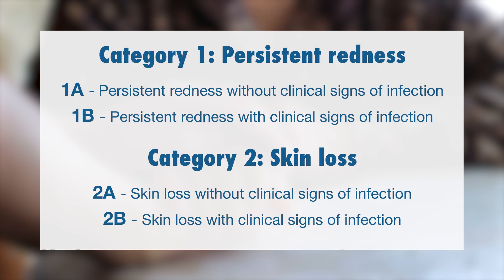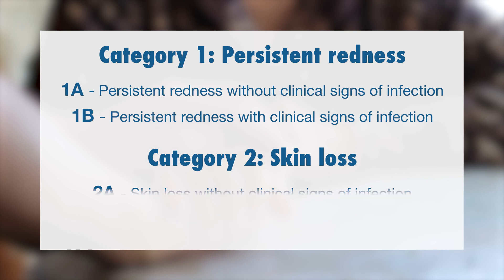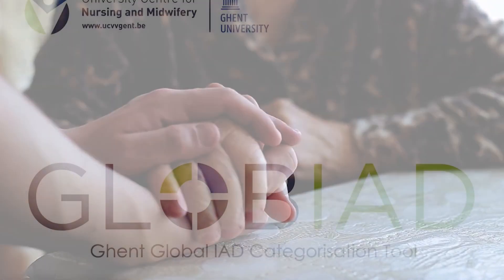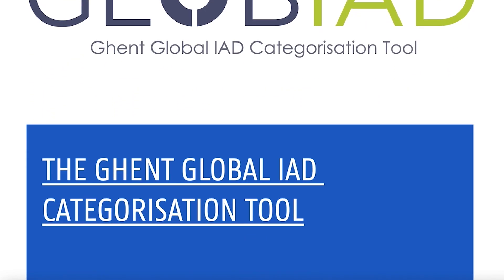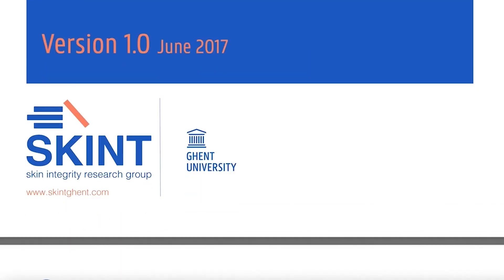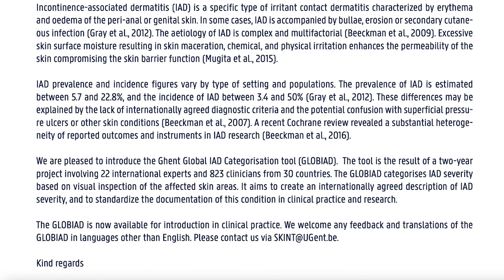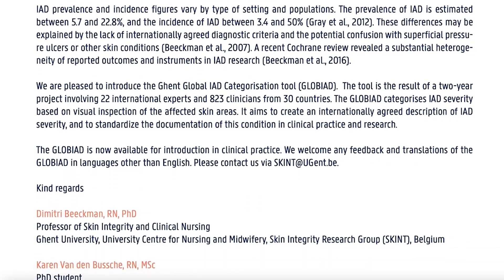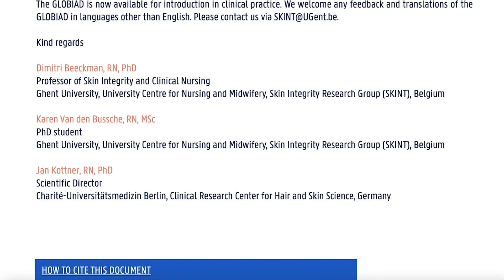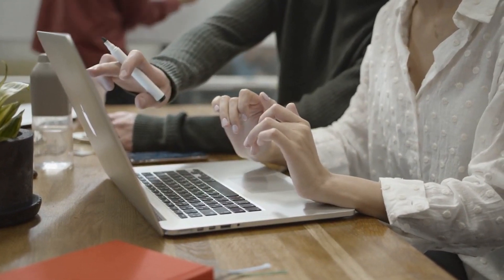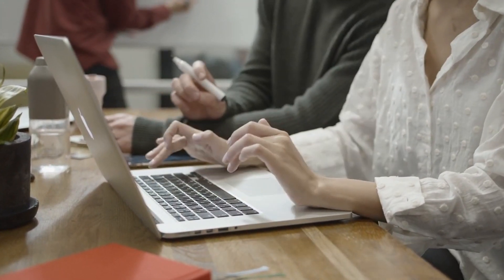Those are the four categories of incontinence associated dermatitis and the assessment criteria for assessing a resident who has incontinence. There's more detail on the criteria, so if you're doing assessments I would recommend that you become familiar with this document. Our team is also going to provide on our application the ability to pull up this data so that you can see and check your criteria as you're doing the assessment.